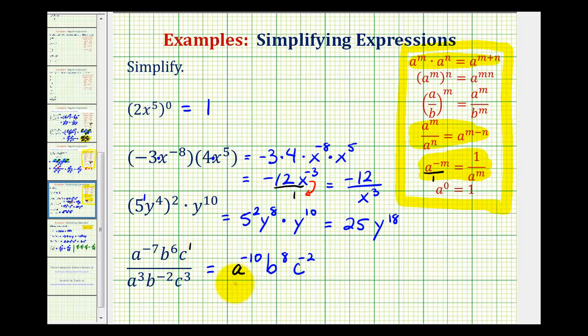So again, if we think of this as a fraction with a denominator of one, we can change the sign of this exponent here and here by moving them to the denominator. Notice how the b has a positive exponent, so it's going to stay in the numerator. So we'll have b to the eighth in the numerator, and the denominator is going to be a to the tenth and c to the second. I hope these examples were helpful.